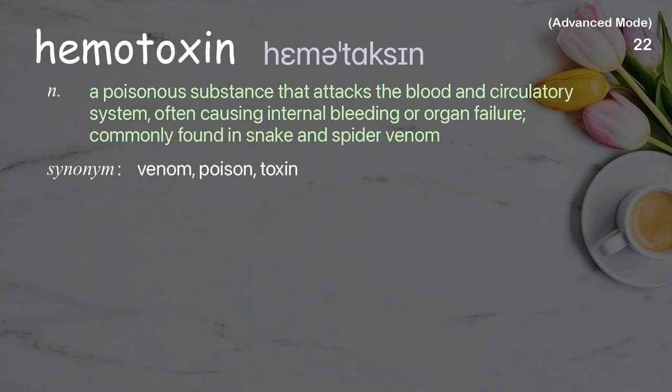Hemotoxin: a poisonous substance that attacks the blood and circulatory system, often causing internal bleeding or organ failure; commonly found in snake and spider venom.